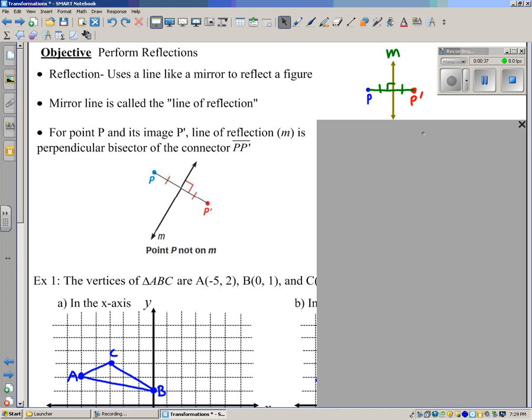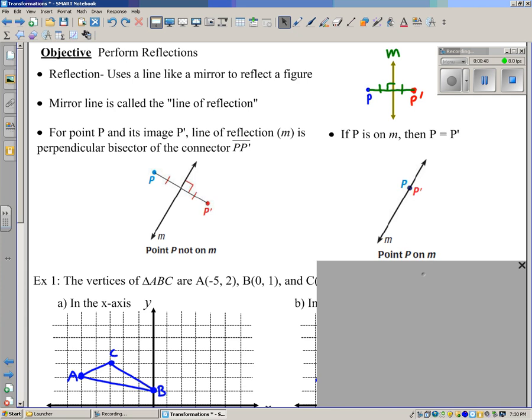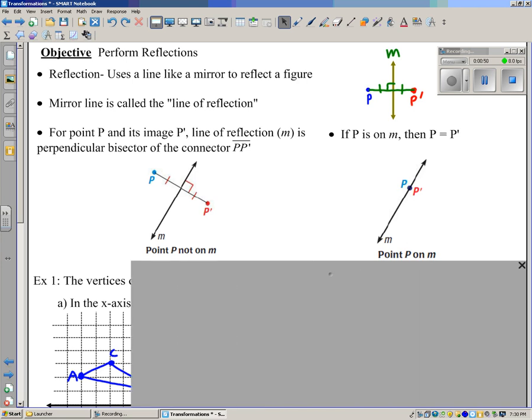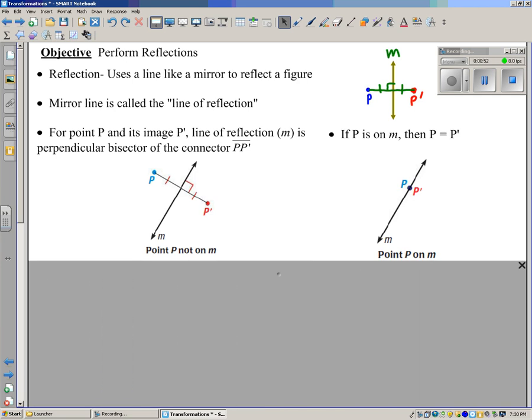Check it out. In this picture, we have a slanted line of reflection. And yet, it's still the perpendicular bisector of the segment connecting P with P prime. What about if P is on the line of reflection? Well, guess what? Then P prime is going to be the same point. And that happens sometimes.